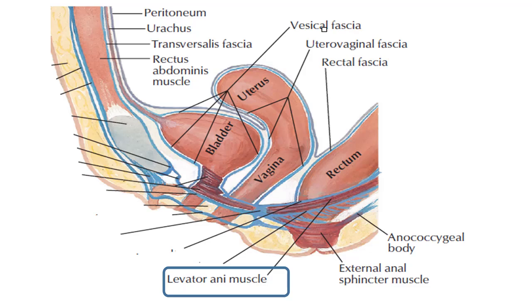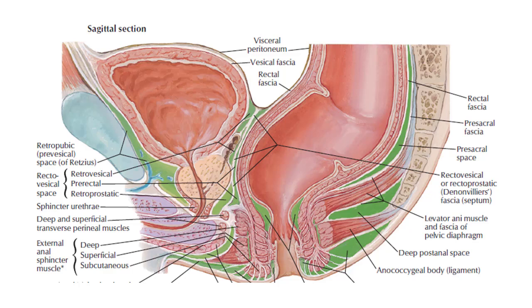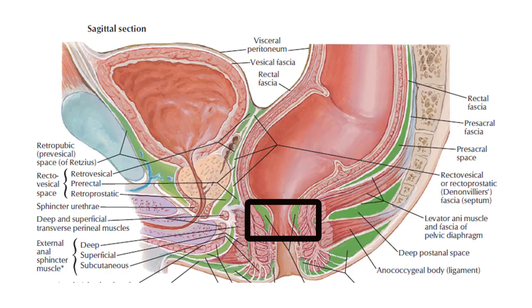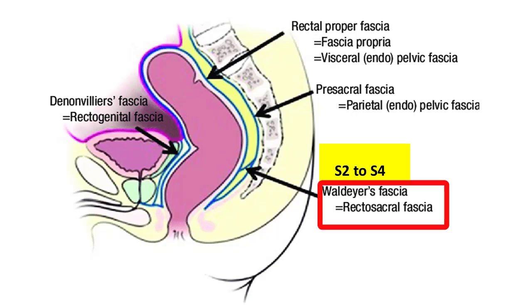Another fascial covering formed by the parietal pelvic fascia is the pre-sacral fascia, located anterior to the sacrum bone. It terminates at the level of the anorectal junction, where it fuses with the fascia of the rectum. At the S2 to S4 level, another fascia originates from it called Waldeyer's fascia, also known as the recto-sacral fascia.